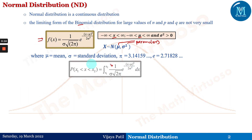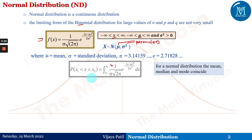For a normal distribution, the mean, median, and mode coincide. You can verify this from the formula, and all three come out equal to μ.